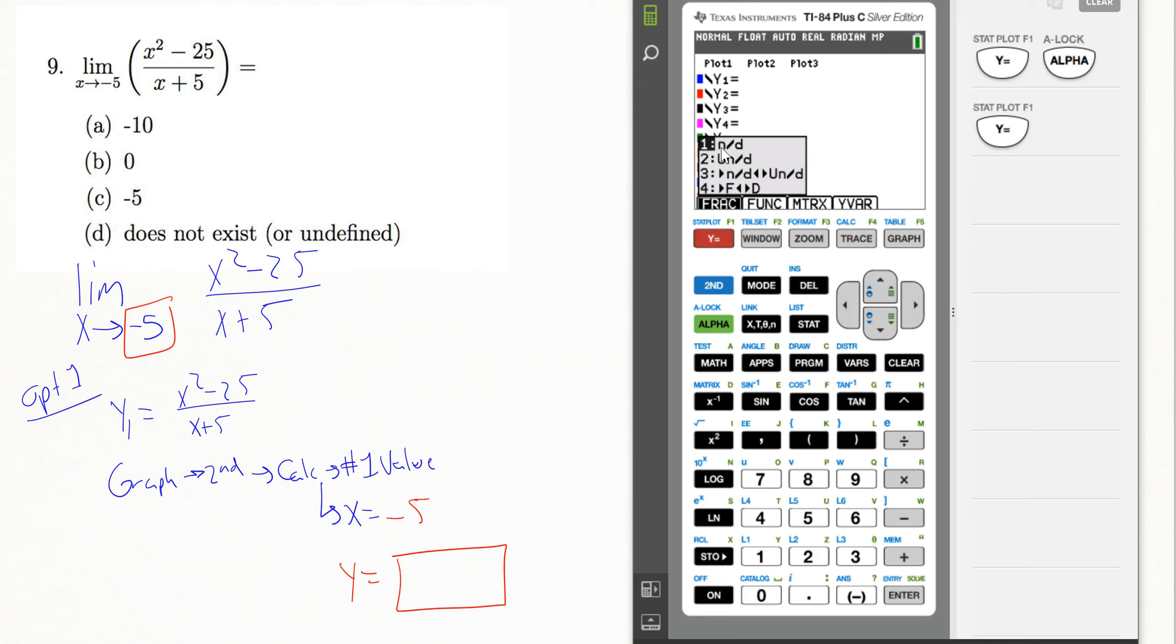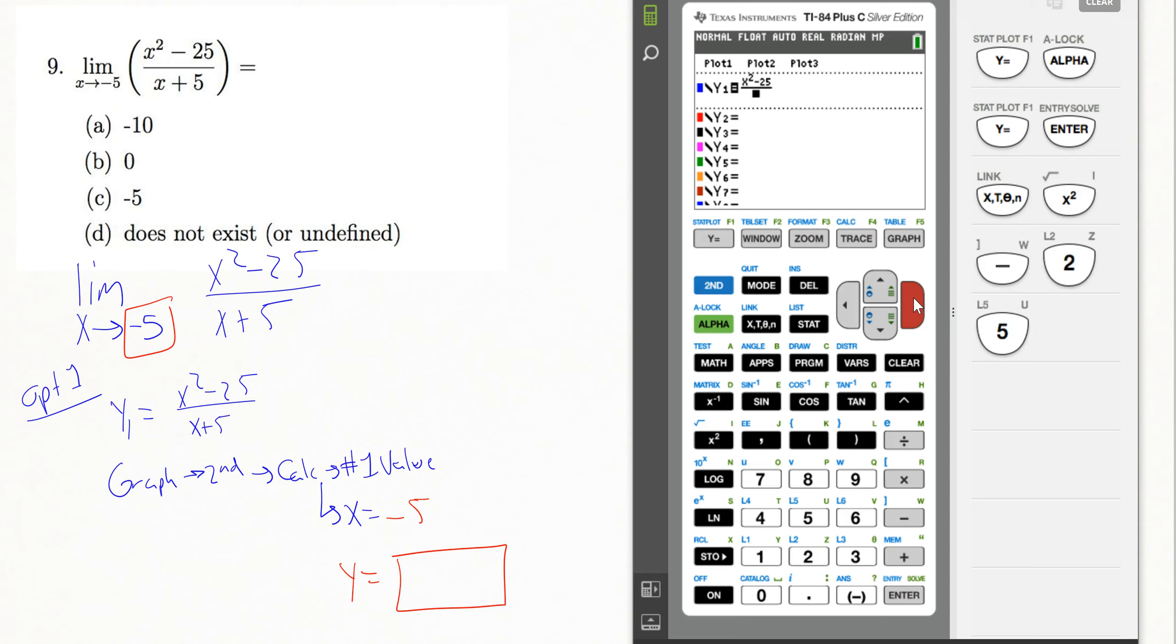From that menu, you can choose that n over d option, number 1 there. What that'll do is split that into a fraction for us, so we don't have to worry about all the extra parentheses that you usually have to have when you're entering something like this into your calculator.